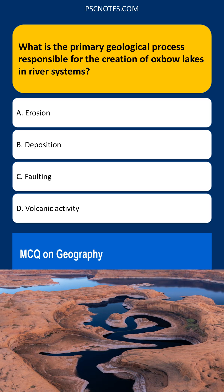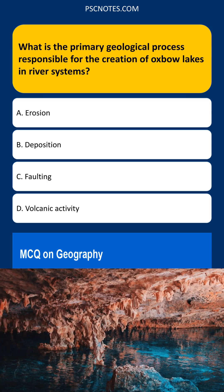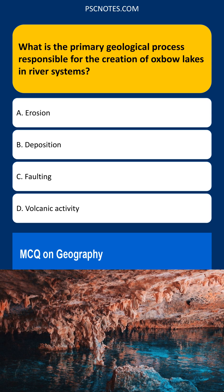Deposition. Oxbow lakes form through a process of river meander migration, where the river bends erode on the outer banks and deposit sediment on the inner banks. Over time, the meanders become increasingly curved, eventually cutting off a section of the river channel. The abandoned channel segment, now isolated from the main river flow, becomes an oxbow lake.